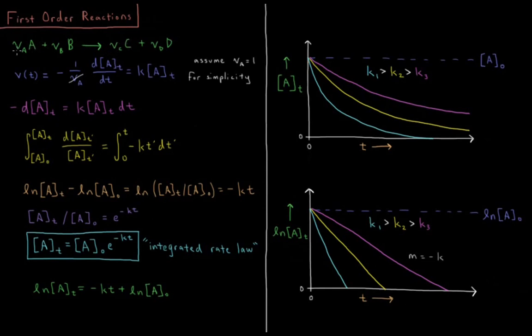each of them having a stoichiometric coefficient, nuA, nuB, nuC, and nuD. Our rate of reaction is going to be defined as, from previous videos, minus 1 over nuA times the derivative of the concentration of A with respect to T.